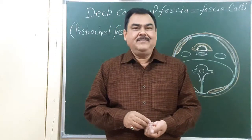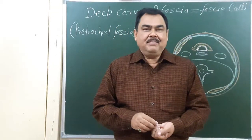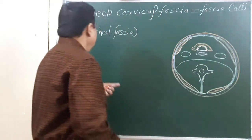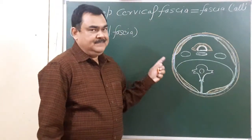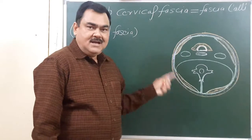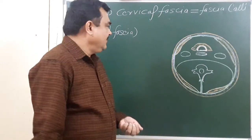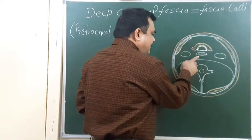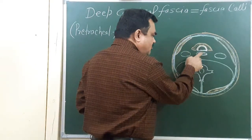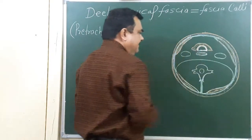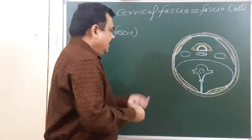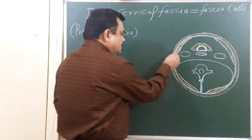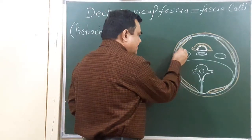Now we discuss about the pre-tracheal fascia. You have seen in this lecture the investing layer of deep cervical fascia. Now, pre-tracheal fascia: in this diagram you can see this is the trachea, this is the esophagus. Here is the investing layer of cervical fascia which covers the sternocleidomastoid muscle.